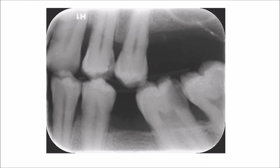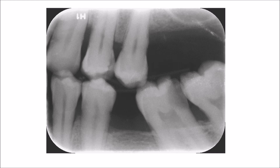This bitewing radiograph shows generalized horizontal bone loss in a patient suffering from periodontitis. There are several carious lesions on the distal surface of the upper second premolar and the distal surface of the lower second molar. However, the mesial surface of the lower third molar seems to be intact. What I want you to look at is this radiolucency,